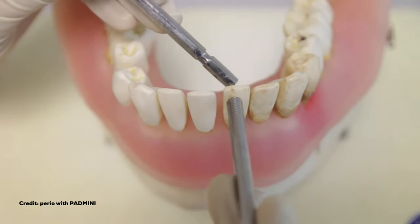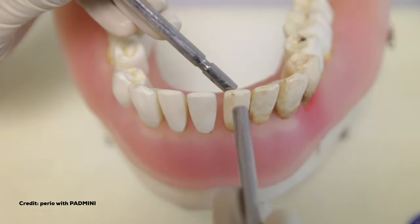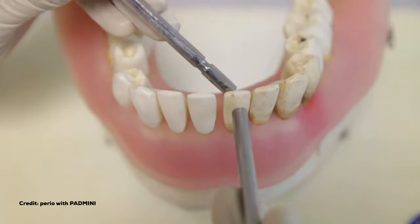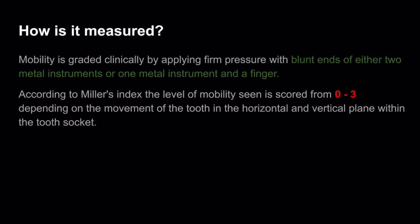As a general rule, mobility is graded clinically by applying firm pressure with blunt ends of either two metal instruments or one metal instrument and a finger. According to Miller's index, the level of mobility ranges from grade 0 to 3 depending on the movement of the tooth in the horizontal and vertical plane within the tooth socket.